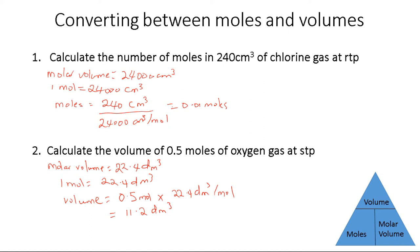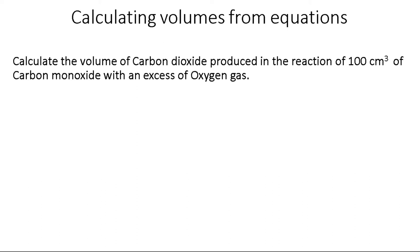Now let's move on to calculating the volumes of gases needed or produced in chemical reactions. Calculate the volume of carbon dioxide produced in the reaction of 100 cm³ of carbon monoxide with an excess of oxygen gas. Once you are given a question in words, the very first step is to always write your balanced chemical equation. A balanced chemical equation gives us the ratio of moles, and because we are doing mole calculations, it is absolutely important that you write the correct equation.